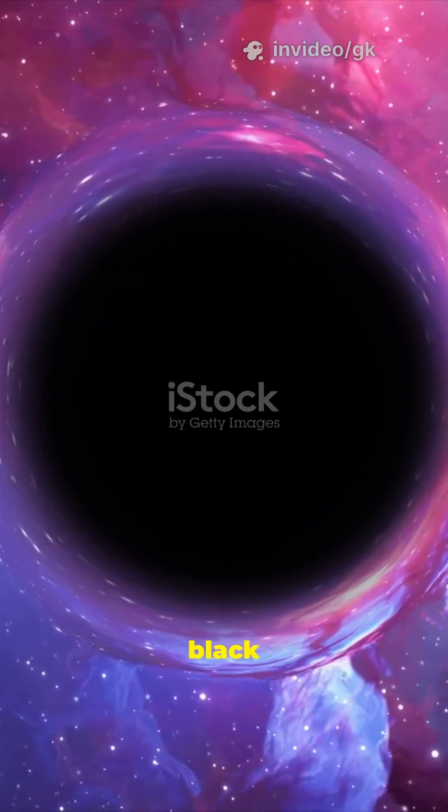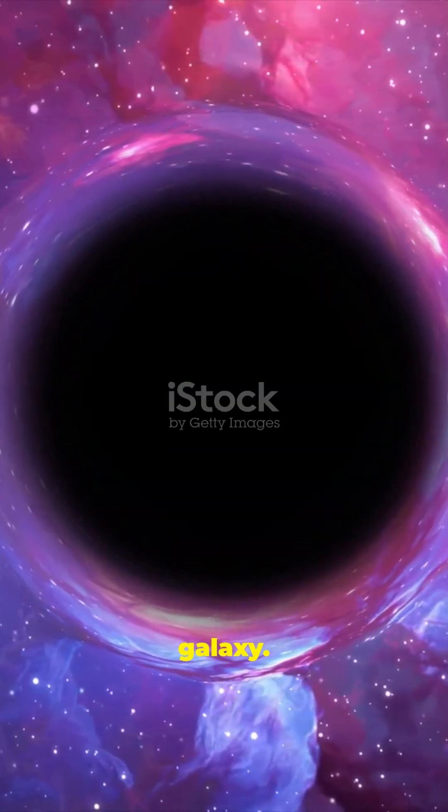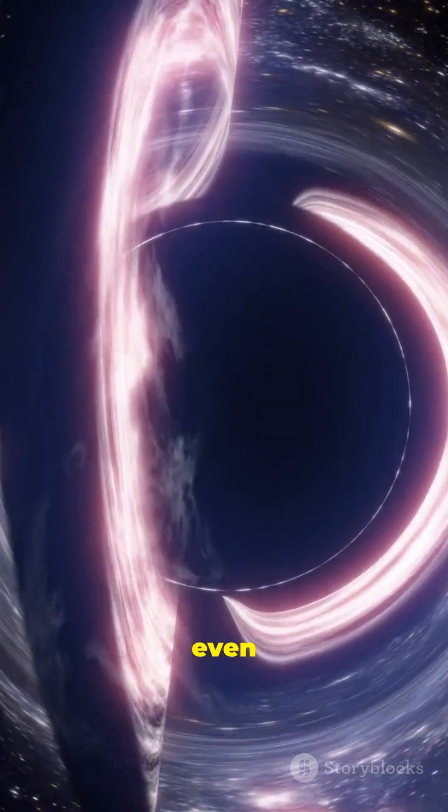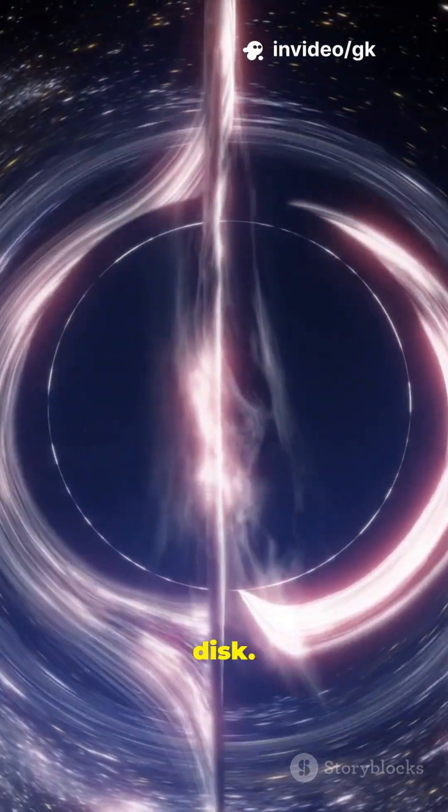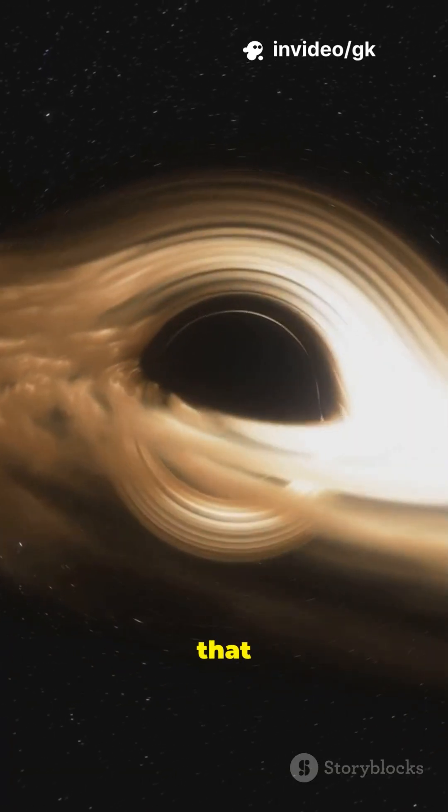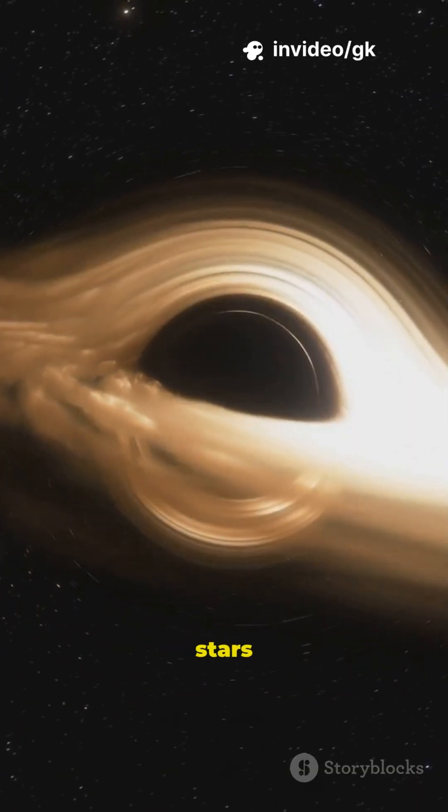A quasar is a supermassive black hole at the center of a young galaxy. When gas, dust, and even stars fall toward it, they spin around in a glowing accretion disk. The friction makes them so hot that they shine brighter than trillions of stars combined.